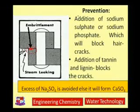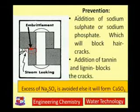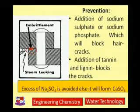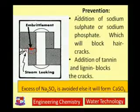To prevent caustic embrittlement, we should add sodium sulphate or sodium phosphate in place of sodium carbonate, as these will block hair-like cracks. Besides that, we can use tannin and lignin to block the cracks and avoid contact between the boiler material and NaOH. However, we must be cautious — if excess sodium sulphate is used, it may form calcium sulphate, which may lead to scale formation. So we should be very cautious while using preventive measures for caustic embrittlement.